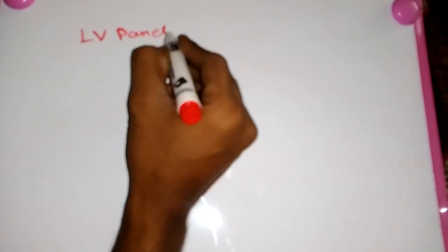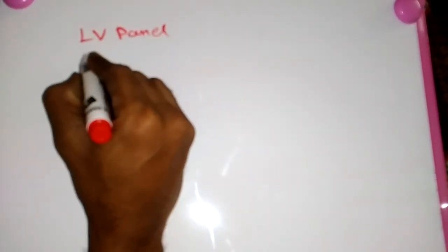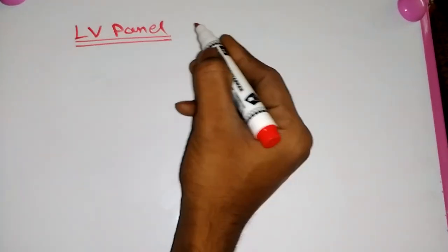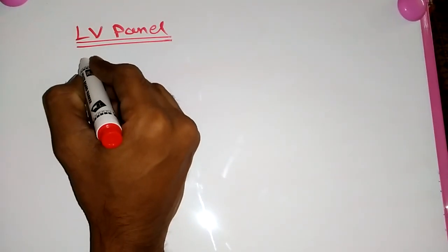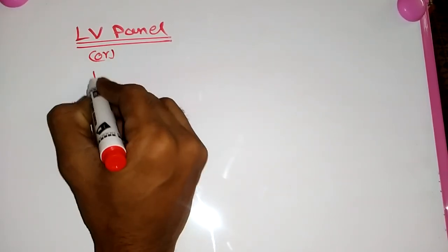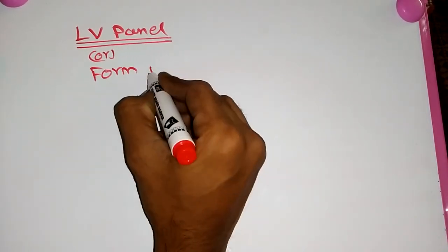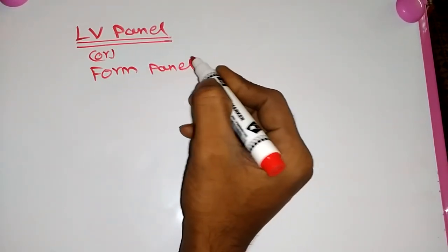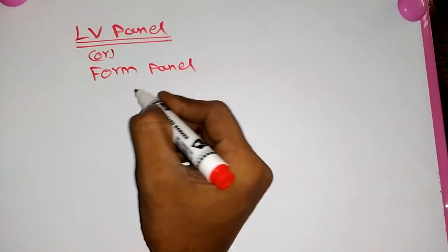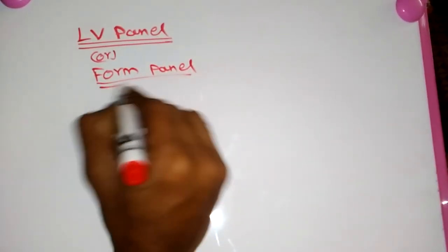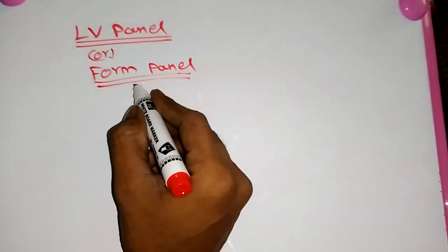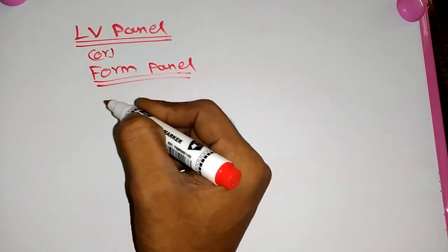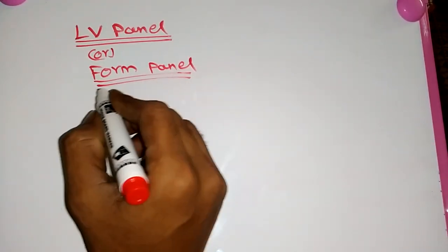Hi guys, today we are going to see LV panels. LV panels are mostly called form panels — like Form 1, Form 2, Form 3, and Form 4. We are going to look at their types and how they are differentiated from each other.